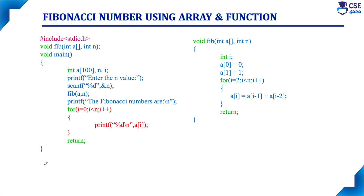What is a Fibonacci number? The first value will be 0 and the second value is 1. The remaining values are generated from these two values. By adding the previous two values, we get the next value: 0 plus 1 gives 1, then 1 plus 1 gives 2, 1 plus 2 gives 3, 2 plus 3 gives 5, 3 plus 5 gives 8, and so on. If you enter the n value, it will generate Fibonacci numbers up to that term — that is the logic of this program.